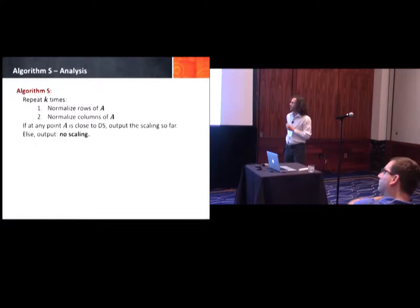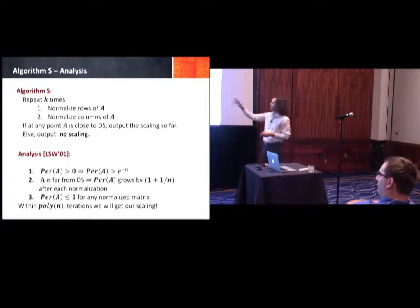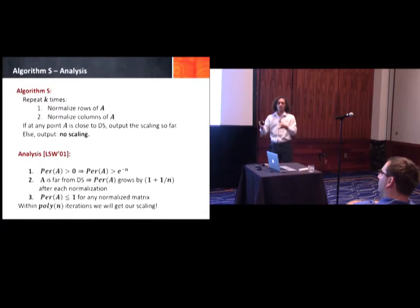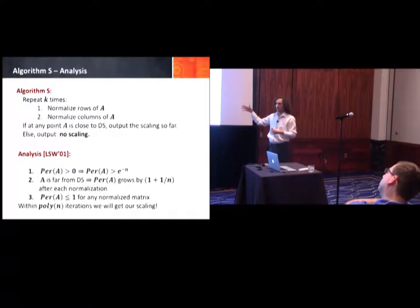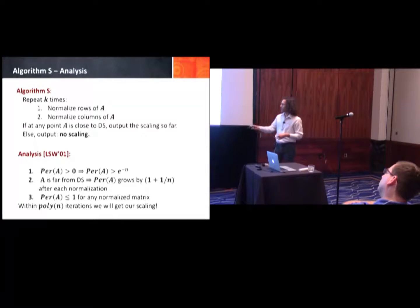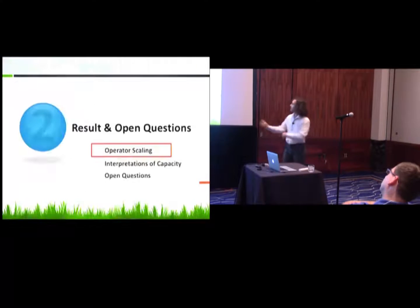Now let's analyze this algorithm, following Linial-Samorodnitsky-Wigderson 2001. If the permanent of A is positive, we get a good lower bound: the permanent is at least e^{-n}. As long as A is very far from doubly stochastic, the permanent grows by a factor of (1 + 1/n) after each normalization step. Since the permanent of any row- or column-normalized matrix is at most one, within poly(n) iterations we either find the scaling or show no scaling exists.